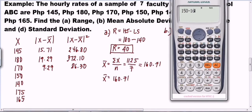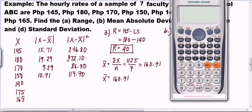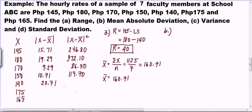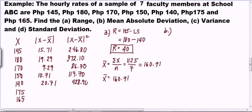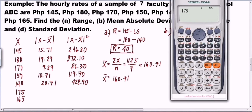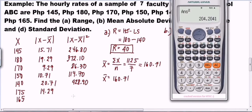For 150: 150 minus 160.71 — this is negative but we take the absolute value — so 10.71, and squared is 114.70. For 140: 140 minus 160.71 gives 20.71, and squared is 428.90. For 175: 175 minus 160.71 gives 14.29, and squared is 204.20.